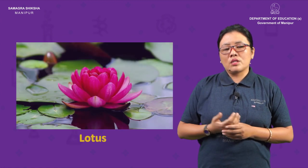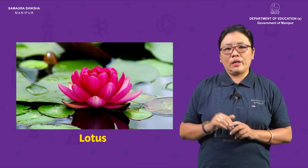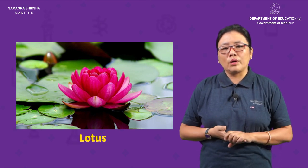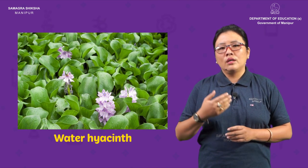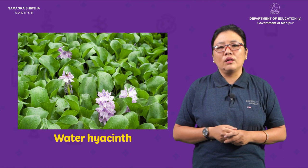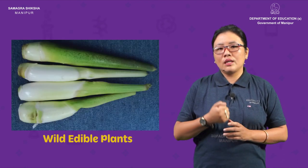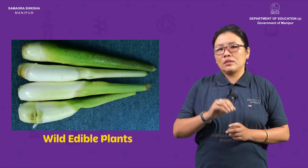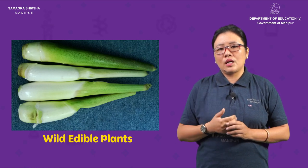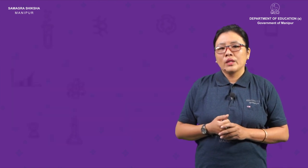There is the lotus. There are different types of flowers in the lake — lotus and water lily. The lotus gives a lot of flowers. The lotus stem and leaves can also be used. The plant is edible.